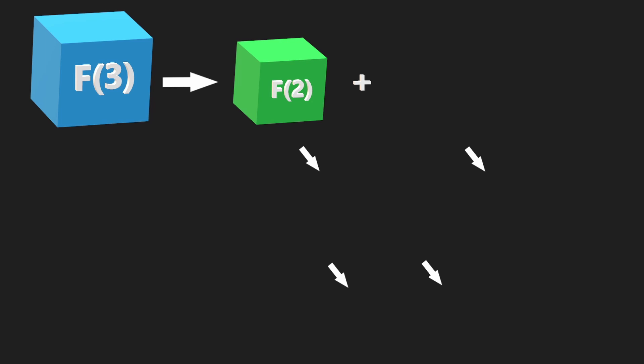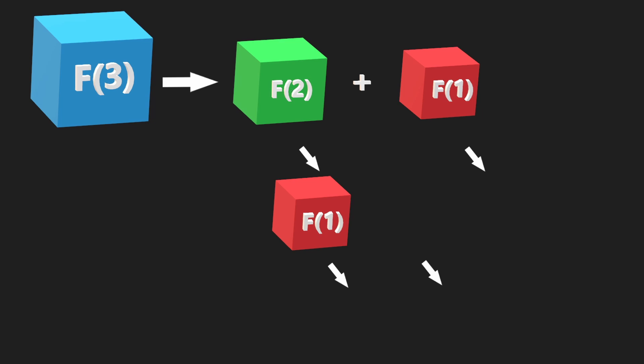Imagine for Christmas I gave you a box containing the third Fibonacci number. You open it up, and instead of a number, you find two more boxes. One is labeled with the second Fibonacci number, and the other with the first. Technically I didn't lie, because you can add those two boxes together to get the third Fibonacci number. Opening the second Fibonacci number box, you find yet another two boxes inside — labeled as the first and zeroth Fibonacci numbers.